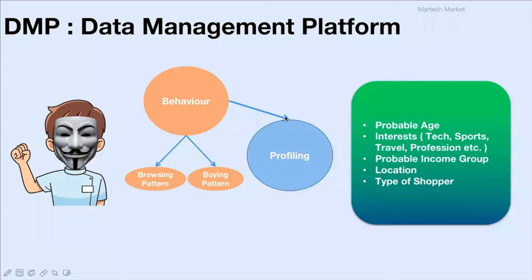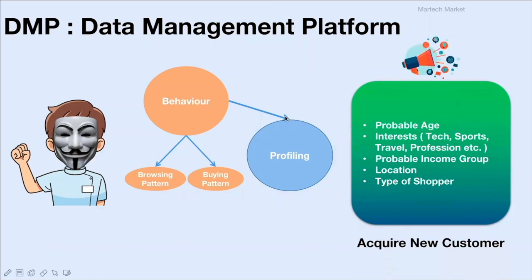As soon as a user visits a particular website, a cookie is placed so that with just the browser ID or cookie ID the DMP starts tracking user behavior. The brand's acquisition or advertising team shares their requirements — the age category, type of user, income category, or kind of internet users they want to target. Based on this, the DMP player runs ads across various partner websites that match these requirements.